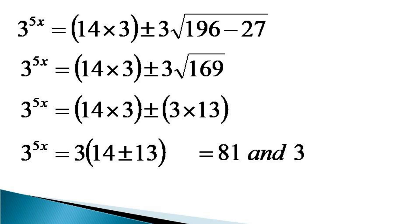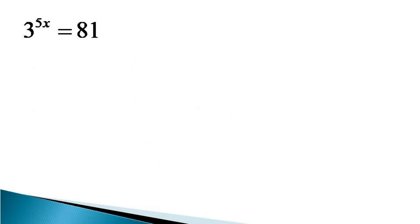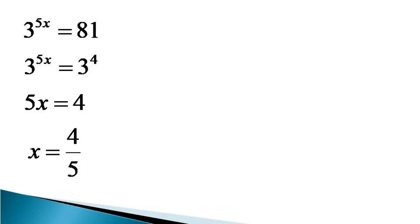All this we could have done without using algebra in the first step itself by expanding the mathematical expression, but there are chances of calculations going wrong. It is always better not to take risks with big mathematical expressions and use algebraic tricks to simplify them. Now we take the first solution: 3 raised to the power 5x is equal to 81. Representing 81 as a power of 3, we get 3 raised to the power 5x equals 3 raised to the power 4. Since the bases are equal, the indices must also be equal, so 5x equals 4, or x equals 4 by 5.